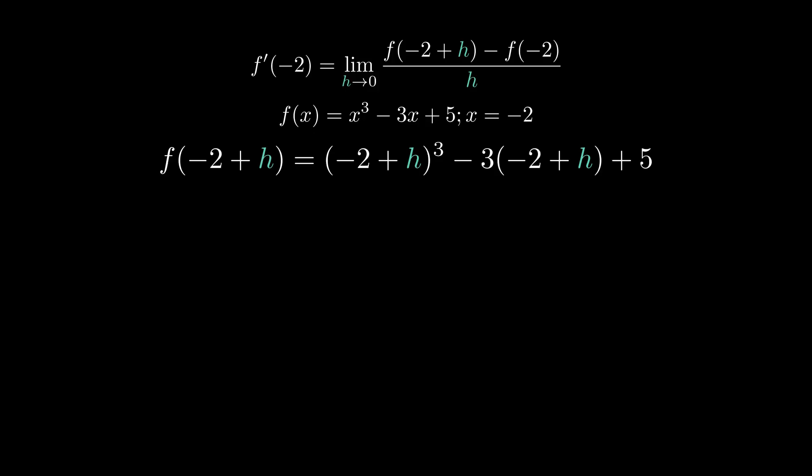We have to fully expand this — we can't leave it as is. So what we're going to first expand is the negative 2 plus h cubed, that's the big one. It's going to be very essential for you to memorize the binomial theorem — that stuff you learn in algebra and pre-calculus. It turns out you kind of need that stuff. Binomial theorem is going to come in clutch here.